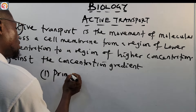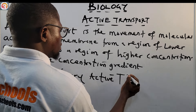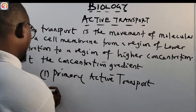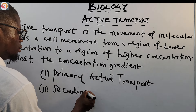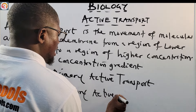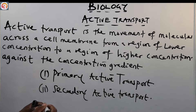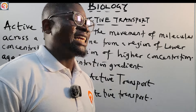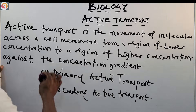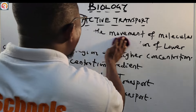There are two types of active transport we want to look at. Number one is primary active transport and number two is secondary active transport.